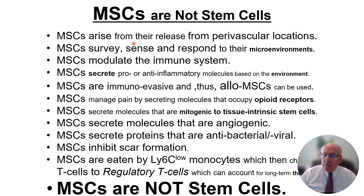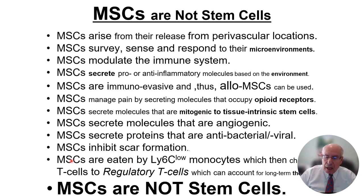MSCs come from perivascular cells. They sense and respond to microenvironments with immunomodulation via pro- and anti-inflammatory molecules. They have molecules that sit on opioid receptors. They produce proteins that are antibacterial and antiviral. They produce mitogens which affect tissue-intrinsic progenitors. And they have effects on blood cells in circulation and can generate regulatory T cells that account for long-term therapeutics.